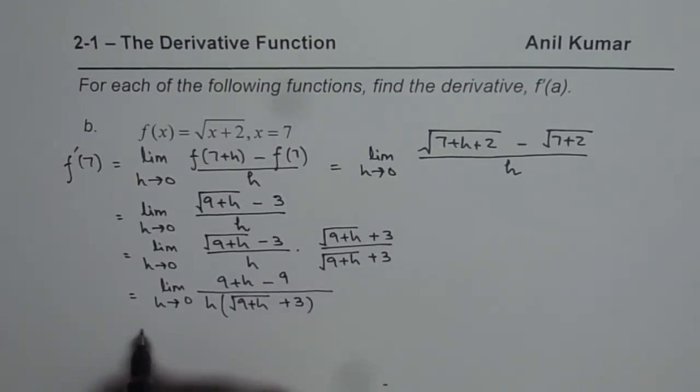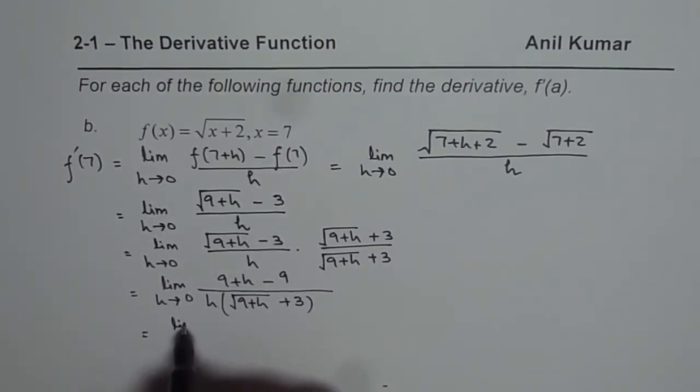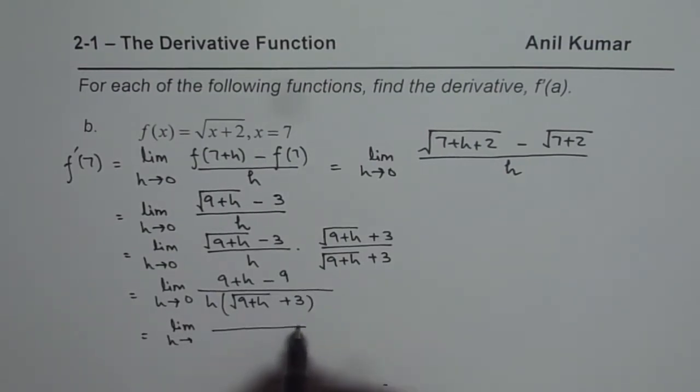Now as you can see, in the numerator, 9 minus 9 is 0. So I could write the numerator as h. Denominator is h times square root of 9 plus h plus 3.